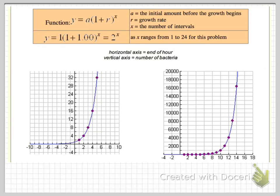Looking at the graph, we can see a general rule. A, or y0, is the initial amount before the growth begins. R is the growth rate, and x is the number of intervals.